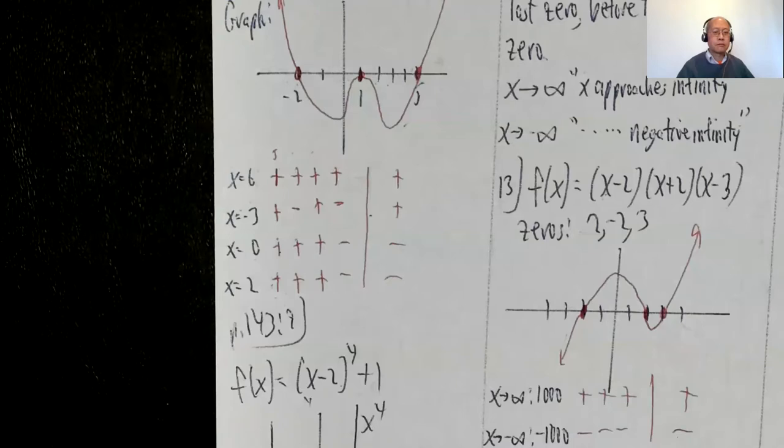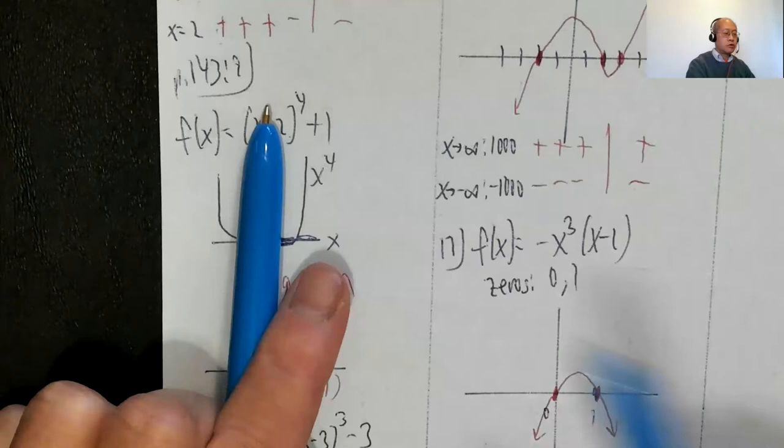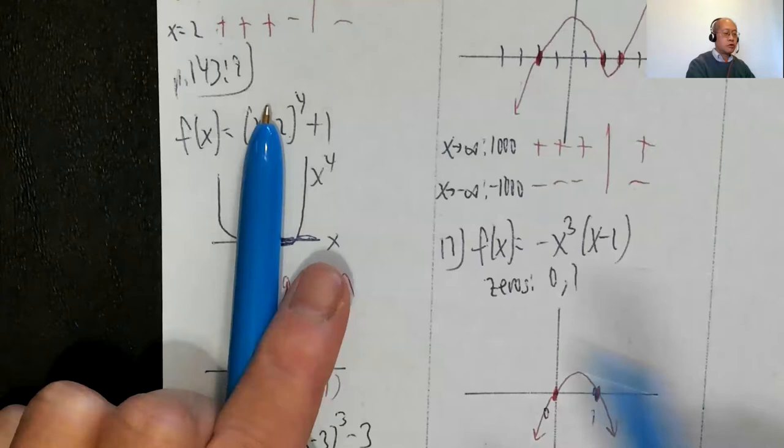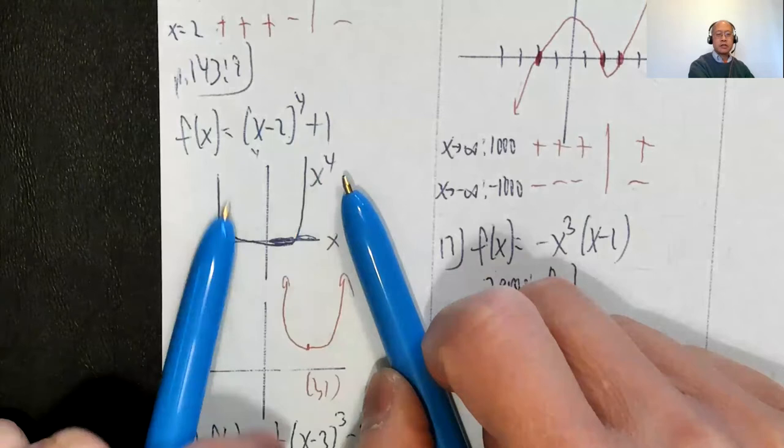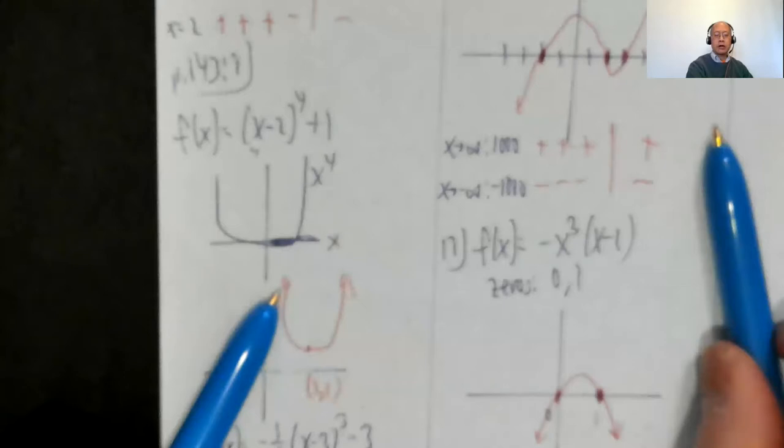For homework problem 9: f(x) = (x-2)⁴ + 1. That's a transformation. We know x to the fourth generally looks u-shaped, sharper than x squared. Then I move two to the right and one up, so the vertex moves from (0,0) to (2,1), and I draw the general u-shape from there.